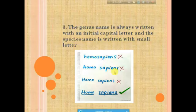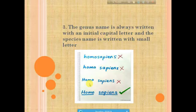Again, it is also wrong because there is a gap but the genus name is not started with a capital letter and there is no underline. This is also incorrect because there is no underline. This is correct because there is a gap between genus and species name, the genus name starts with a capital letter, the species name is in small letters, and the underline is present — that is why it is marked correct.